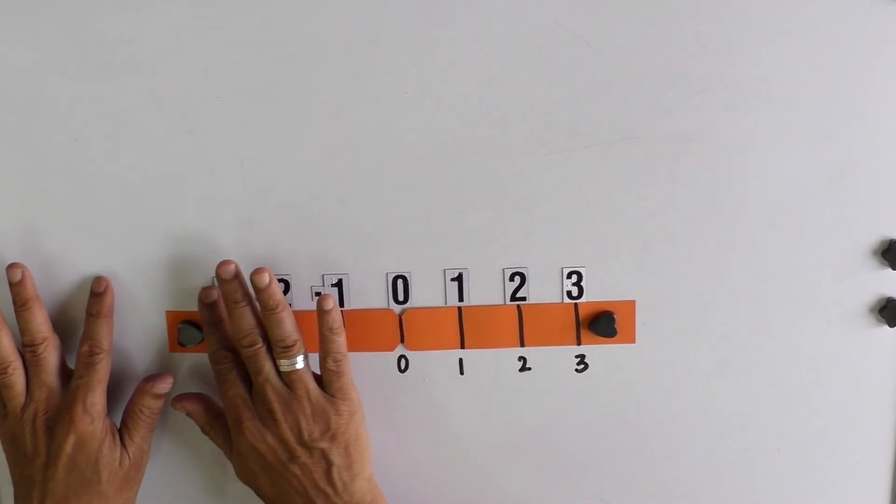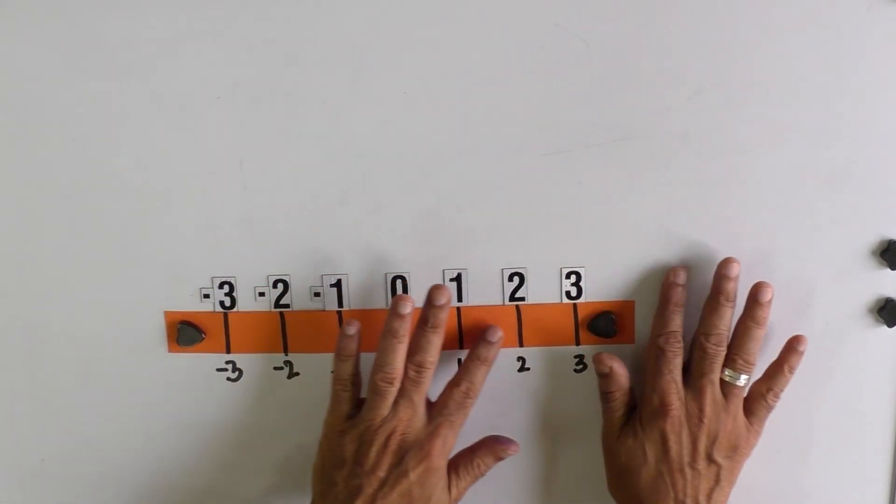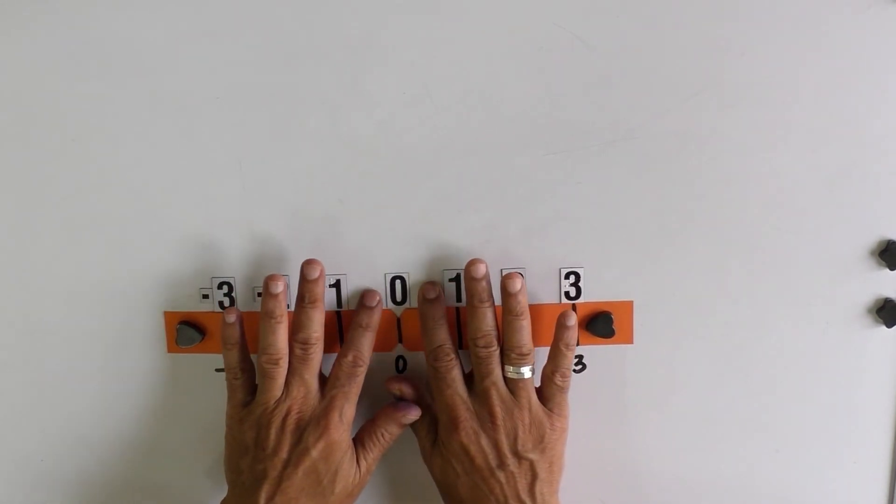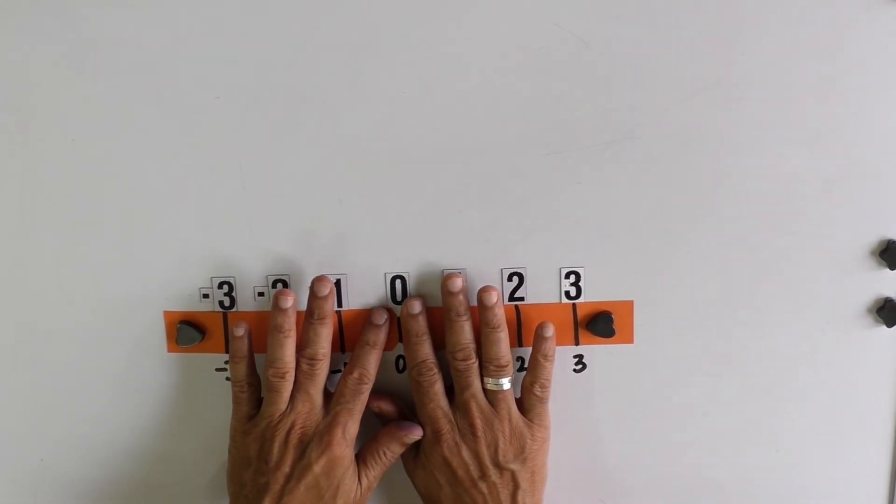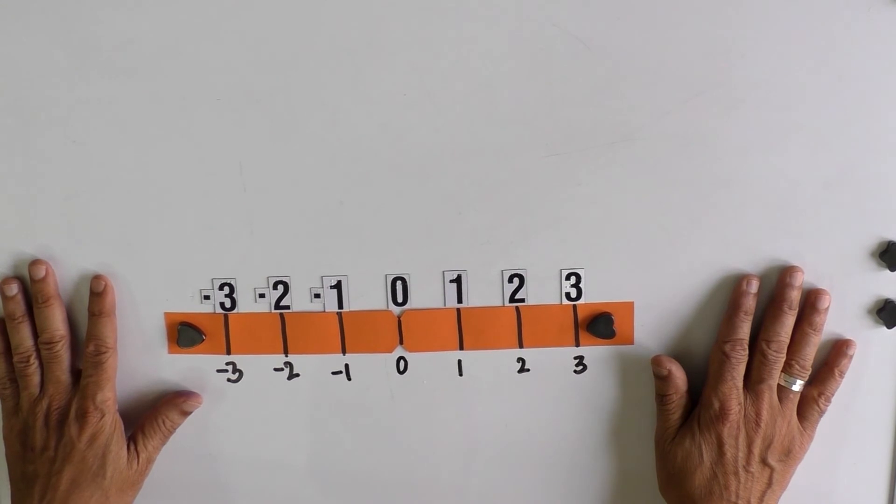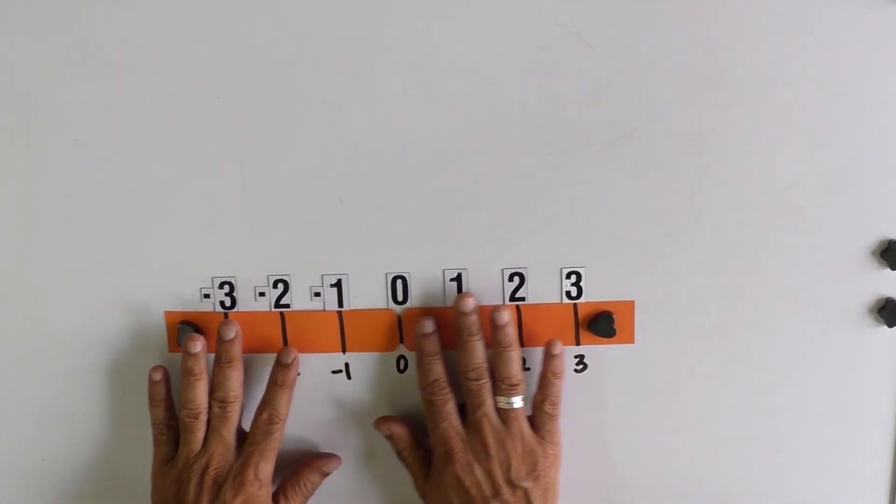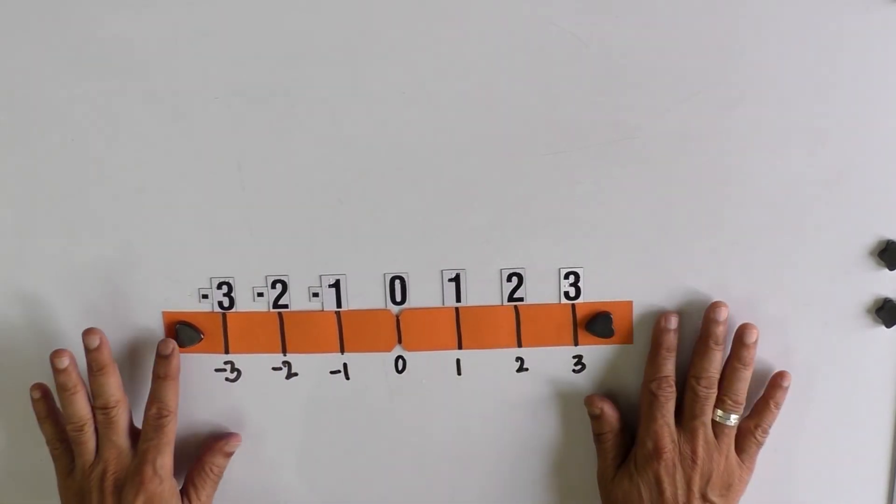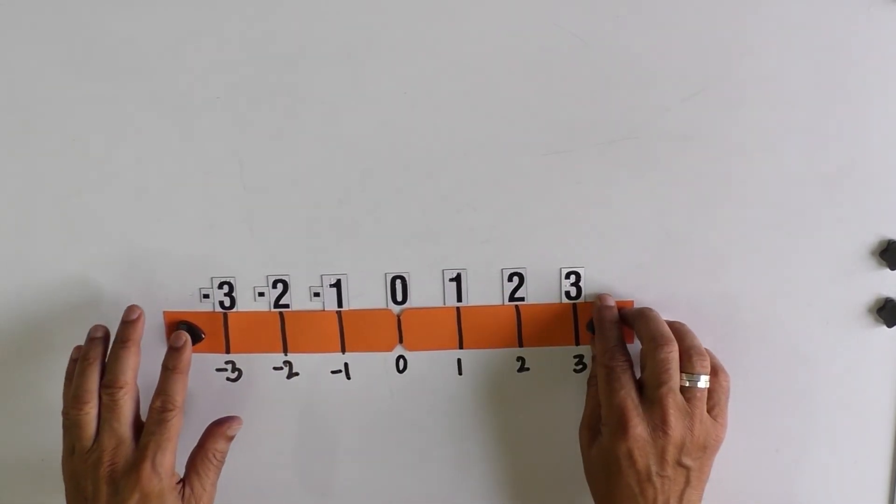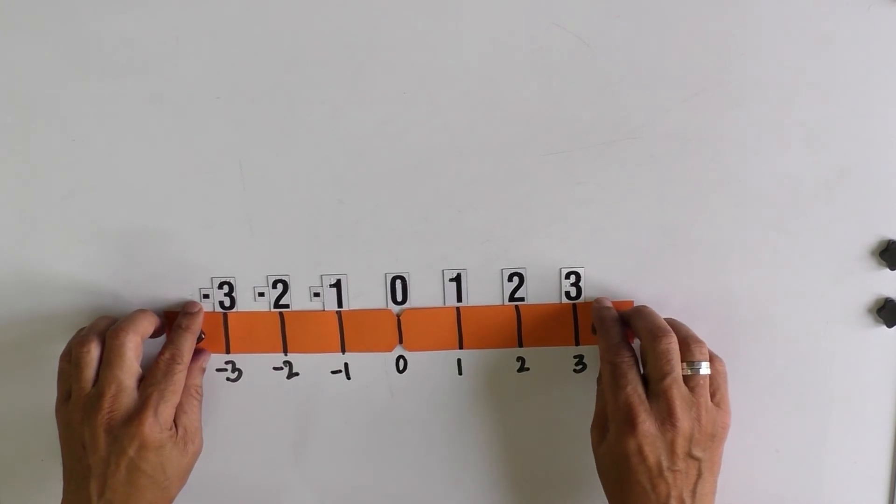So the numbers on the minus side and numbers on the plus side and the zero put together are all called as integers. So this concept is taught to the child through the number line, and it is a simple one.